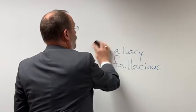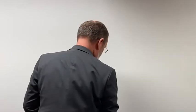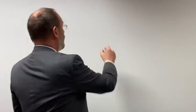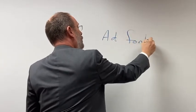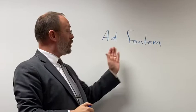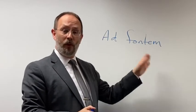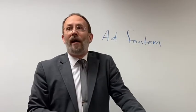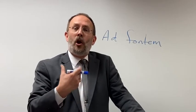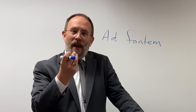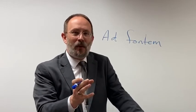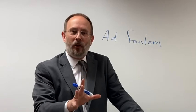The first set of fallacies of relevance is what we call the ad fontem fallacies. 'Ad fontem' in Latin literally means 'to the source.' These are fallacies that go to the root of something, weaken it, and show that it's not making a good argument.